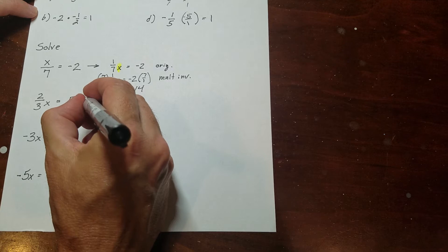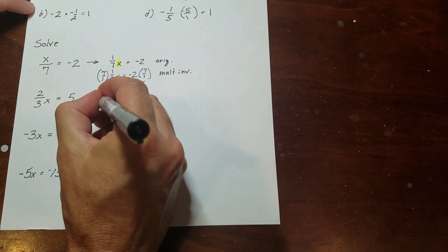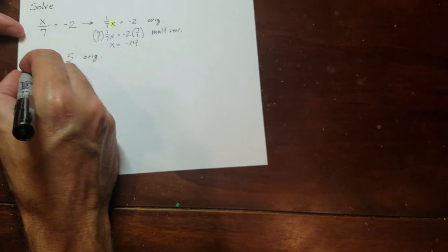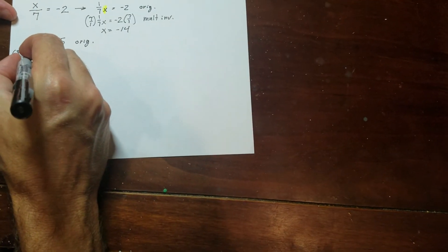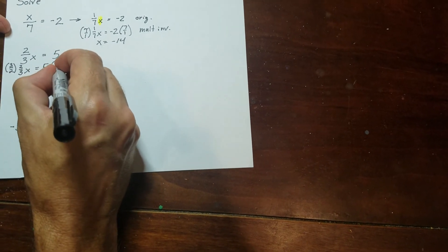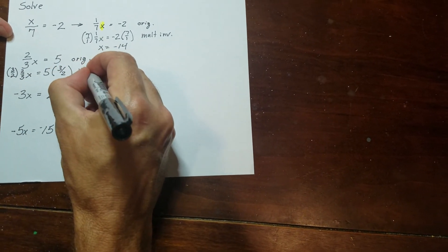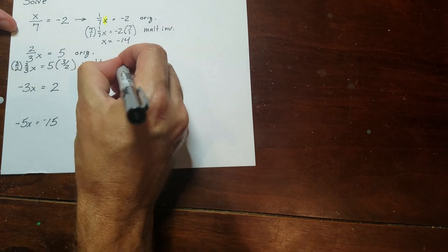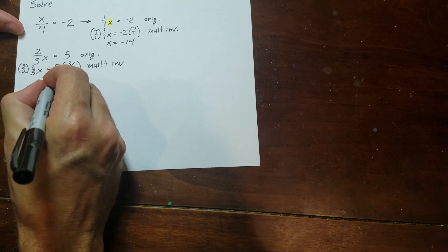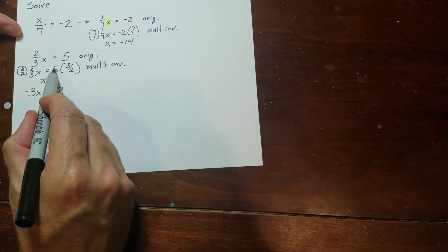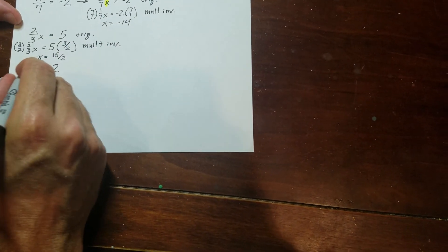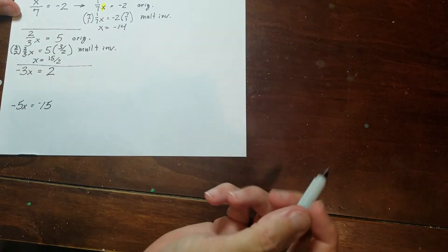For the next equation, I don't need to rewrite it. I'll use the multiplicative inverse directly: multiply both sides by 3 over 2 to cancel the coefficient 2 thirds x. The left side becomes x, and the right side gives 5 times 3 over 2, which is 15 over 2.